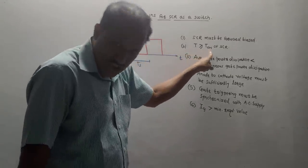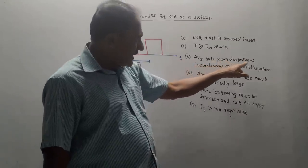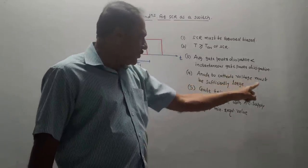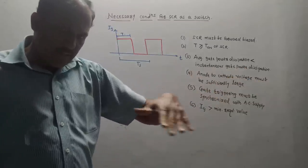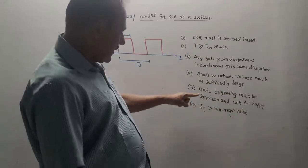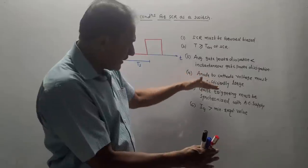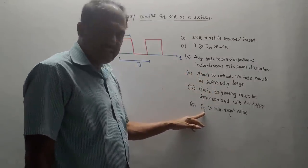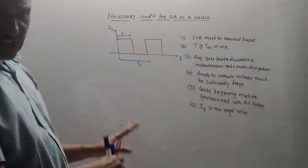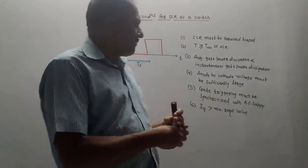Third condition: average gate power dissipation should be less than instantaneous gate power dissipation. Fourth: anode to cathode voltage must be sufficiently large so that the SCR can change from forward blocking to forward conduction mode. Fifth: gate triggering must be synchronized with AC supply — variations in AC supply should correspond to variations in gate current. Sixth: magnitude of gate current IG must be greater than the minimum required value. These are the necessary conditions for SCR to operate as a switch.